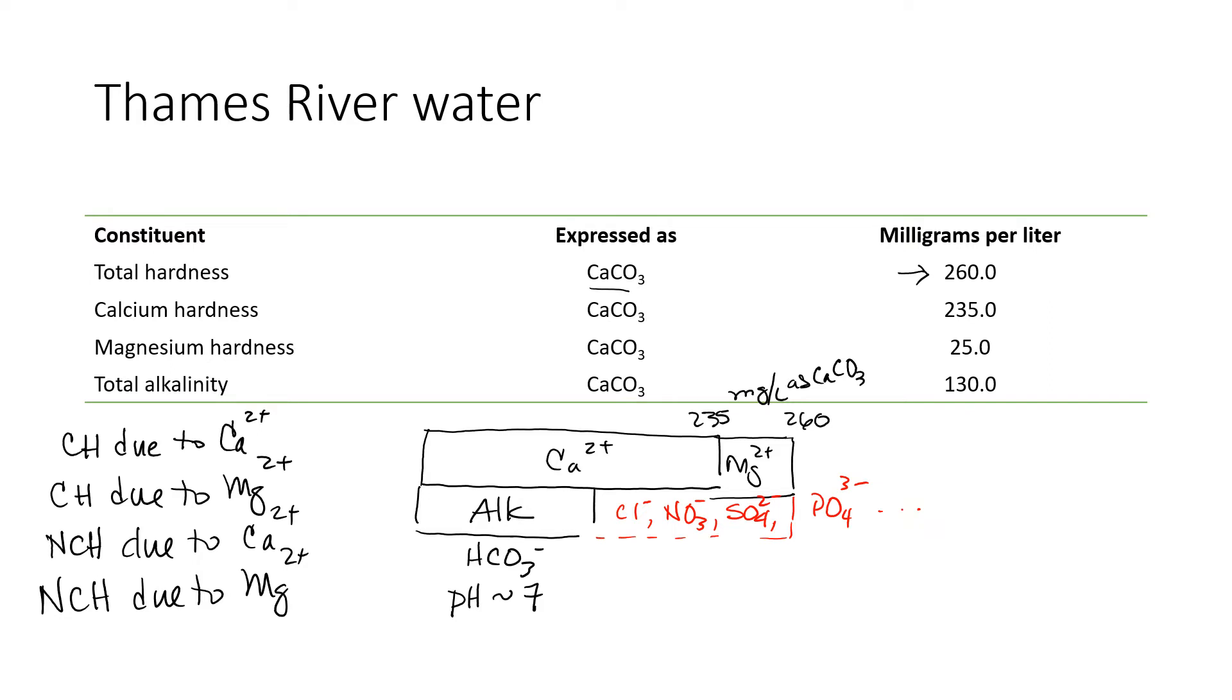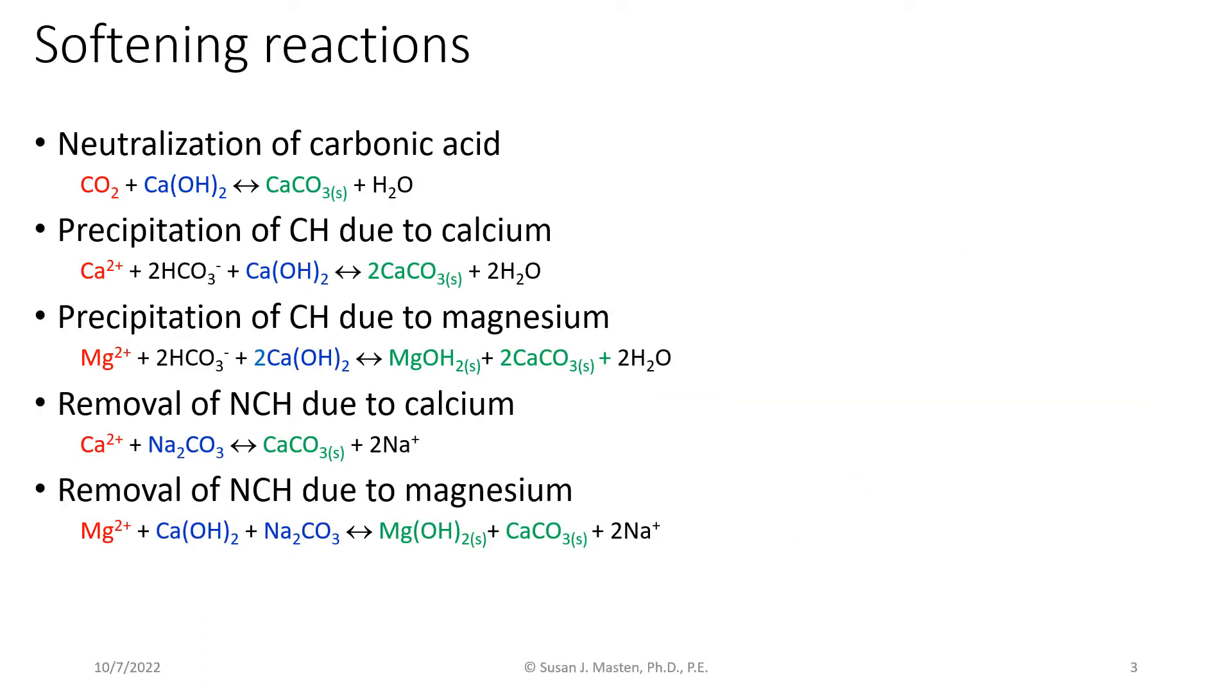So now that we have that, we can then look at using the stoichiometry. So we're given in the notes the stoichiometry: reaction 1, 2, 3, 4, 5. So think about, based on what you're given, which of these reactions are important. It won't all be important. You need to think about which ones are.